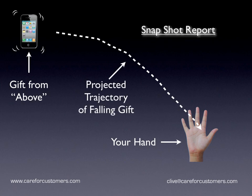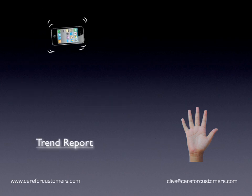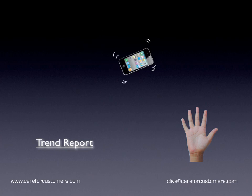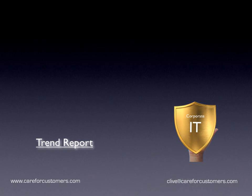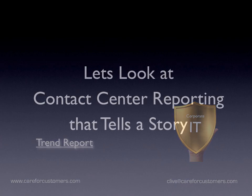Let me give you a real cheesy example. Here's a good snapshot report. You take a look at this and say this iPhone 4 is going to follow this path and fall right into my hands. Well, from a snapshot report, it looks good. But when you turn that into a trend report, the story just may turn out to be different. And there is the case — corporate IT steps in and they deny the iPhone 4 for you. So that's the version of the trend report versus the snapshot report.